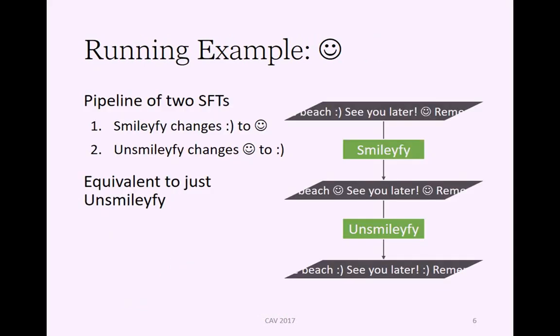Our running example will be a pipeline of two symbolic finite transducers. First is Smileyfy, which changes any instances of colon right-parenthesis to this smiley character from Unicode. Then Unsmileyfy, which changes these smiley characters into colon right-parenthesis. It's kind of intuitive that this pipeline is equivalent to just running Unsmileyfy, because Unsmileyfy undoes the work of Smileyfy.